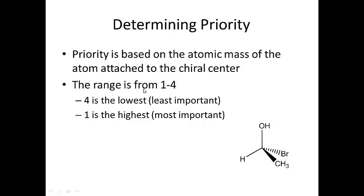We base priority on the atomic mass of the atom attached to the chiral center. The range is from 1 to 4, with 4 being the lowest priority and 1 being the highest. Hydrogen is always your lowest priority group unless there's a lone pair, which has even lower priority. For this molecule: bromine has an atomic mass of 79, oxygen is 16, carbon is 12, and hydrogen is 1. So bromine has the highest priority.